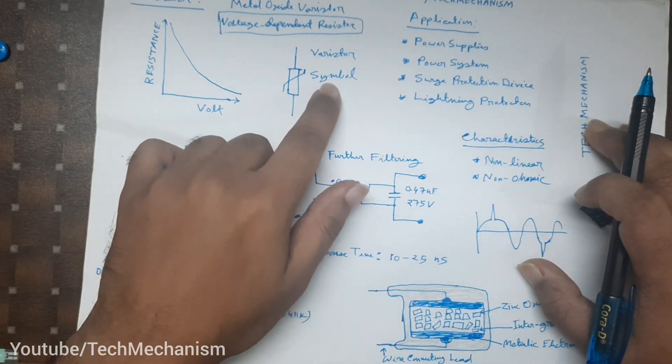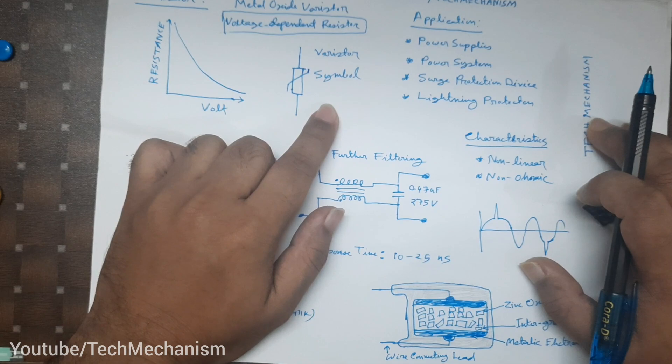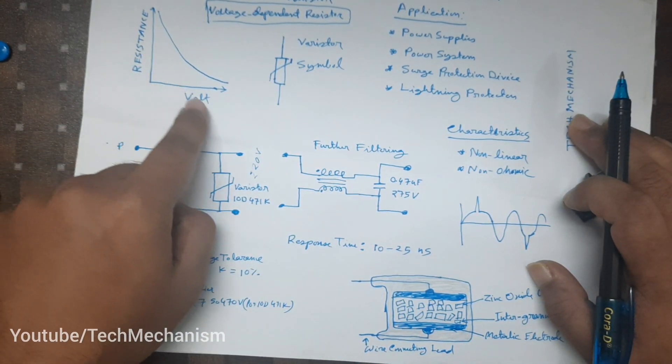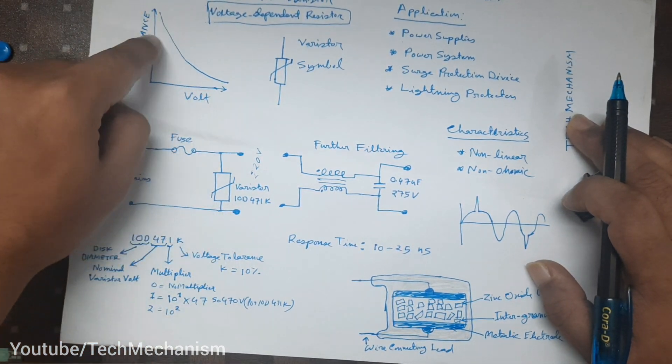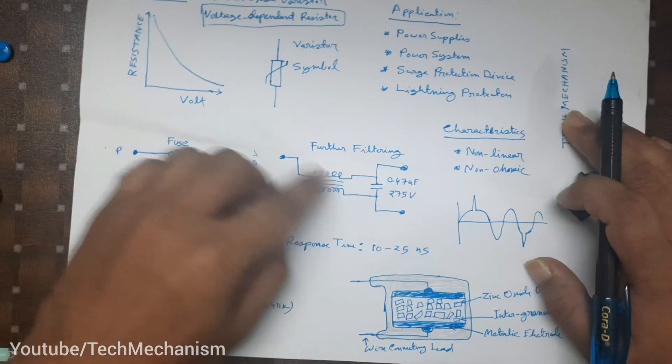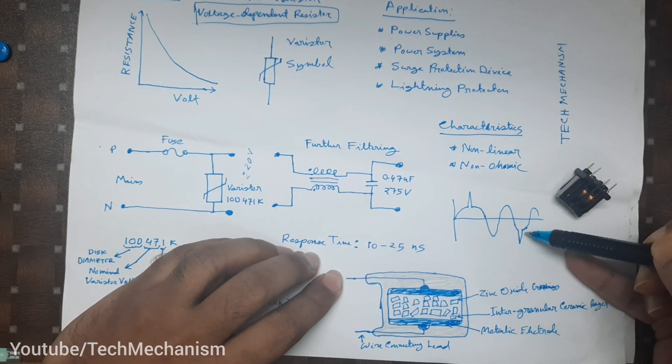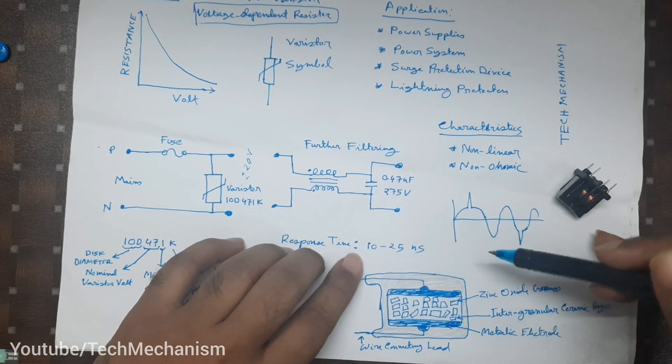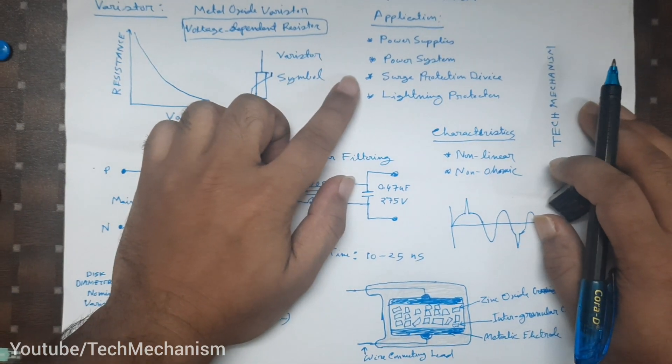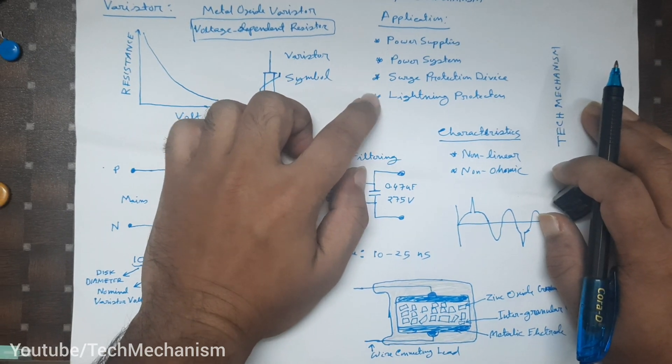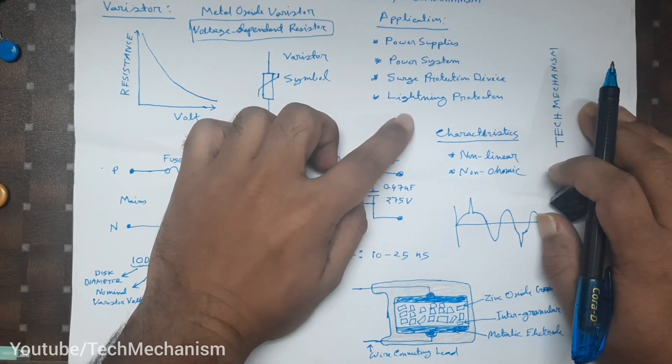The varistor symbol is like this, very simple. The characteristic of the varistor is not ohmic and it is not linear, it's nonlinear. That way our voltage spike like this can be detected within 10 to 15 nanoseconds. The applications are in power supply, power system, surge protection devices, lightning protection, etc.